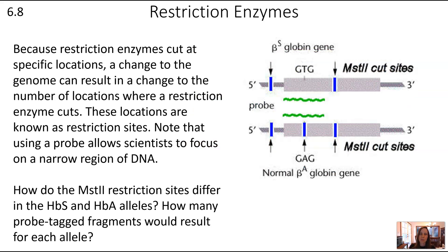Because restriction enzymes cut at specific locations, a change to the genome can result in a change to the number or location where a restriction enzyme cuts. If nucleotides change, that can change how many cuts a restriction enzyme makes in a particular area. The locations where they cut are known as restriction sites. Scientists can also use probes — illustrated here with a green squiggly line — to focus on a narrow region of DNA.